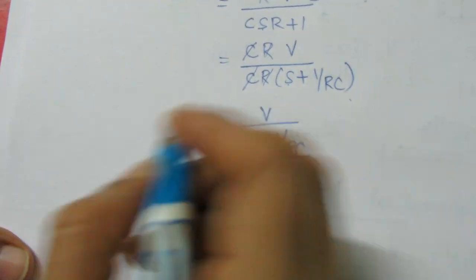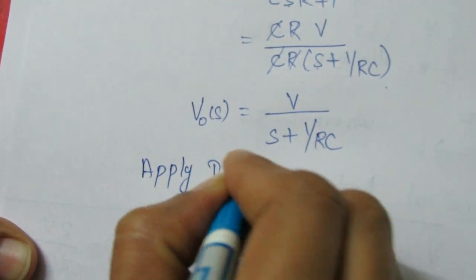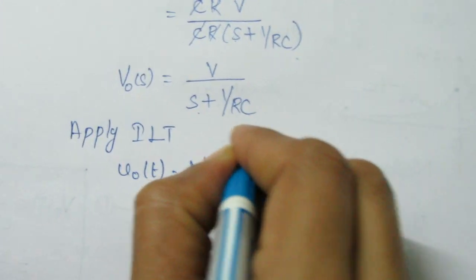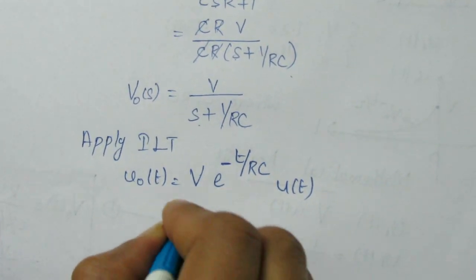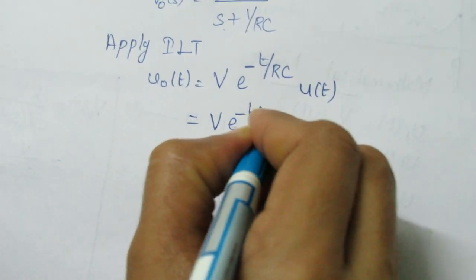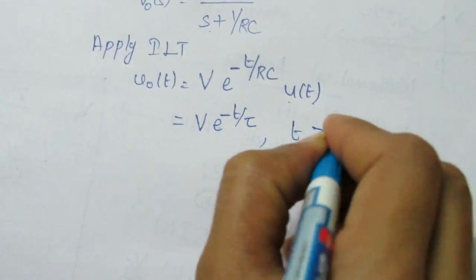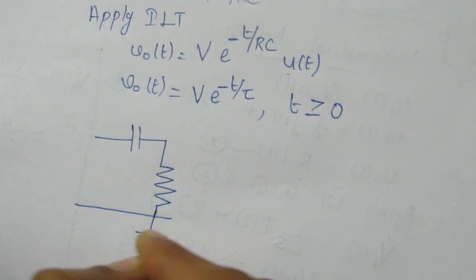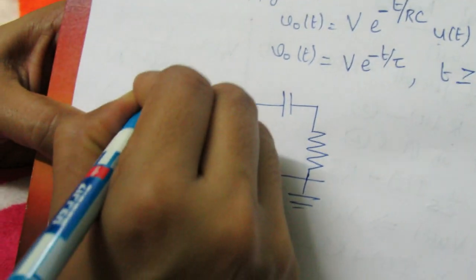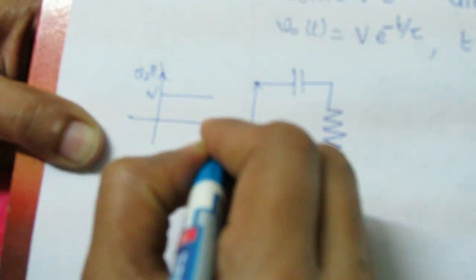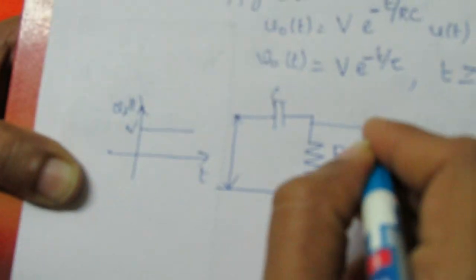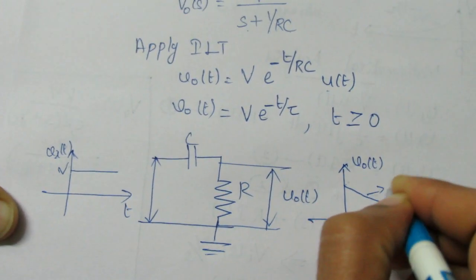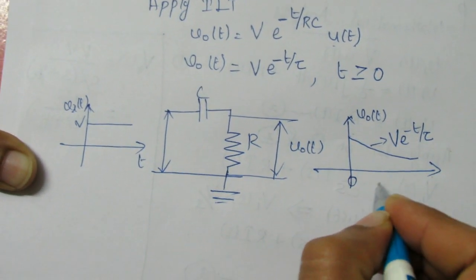This is V_out(s). Applying the inverse Laplace transform on both sides: V_out(t) = V · inverse Laplace of 1/(s + 1/RC), which equals V·e to the power minus t/RC, multiplied by U(t). This can be simplified and written as V·e to the power minus t/tau, valid for t greater than or equal to 0. Therefore when we apply a step signal to a high pass RC circuit, the output will be an exponentially decreasing signal V·e^(−t/τ).